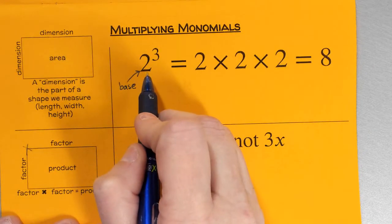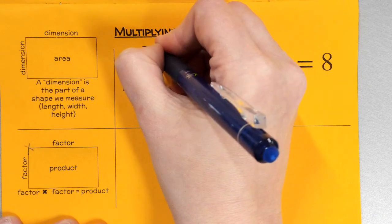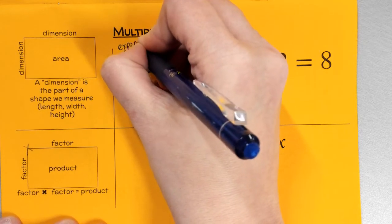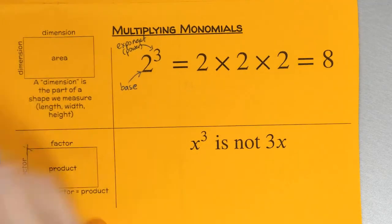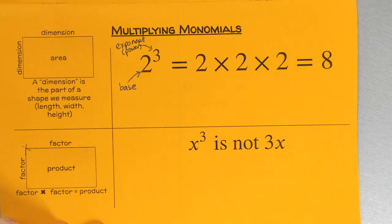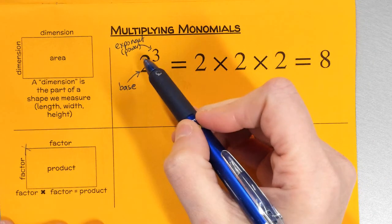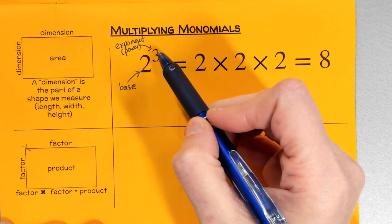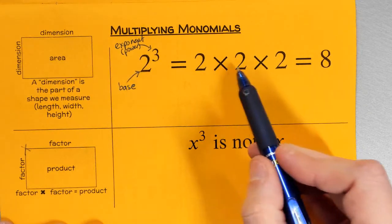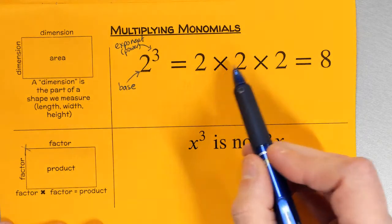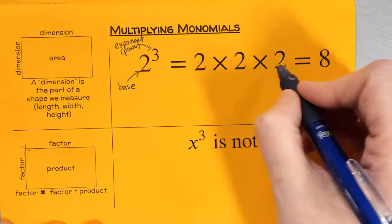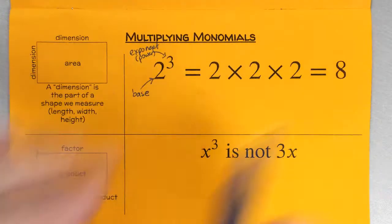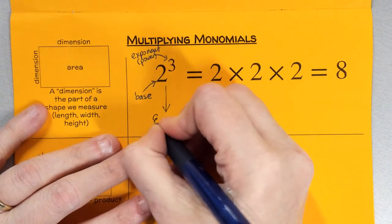Two is the number I'm multiplying repeatedly. Three is what we call the exponent — sometimes called the power, and as we talked about in previous notes, it's also called the degree. So we take a base and multiply it by itself the number of times the exponent specifies. Two to the third means two times two times two, which gives a final answer of eight. These different representations have names — we call this one exponential form.